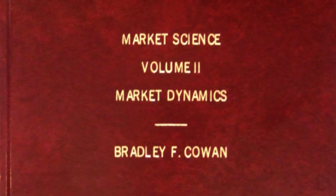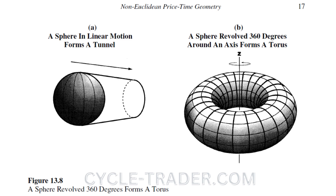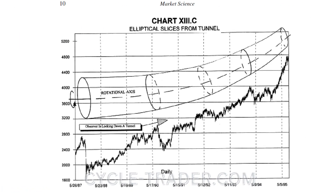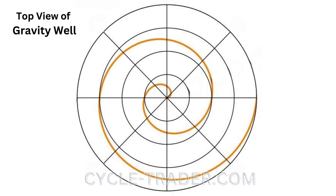Cowan's Market Science set of books, figures 13.8 and chart 13c, used his four-dimensional concept of price-time to describe this torus, or donut shape. Cowan's model equates price with space from Einstein's model. A two-dimensional top view of the gravity well is a series of concentric circles, with the central point being the center of the well.